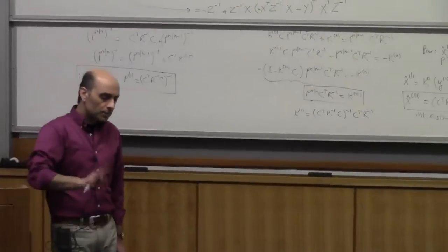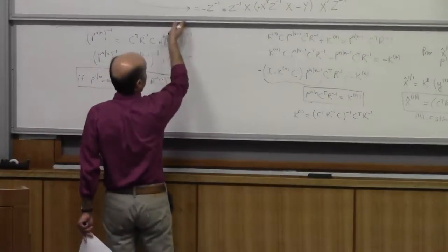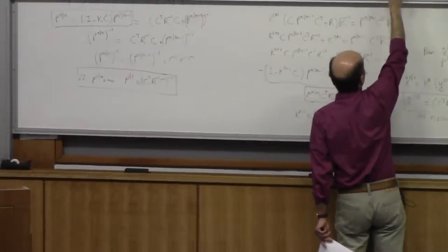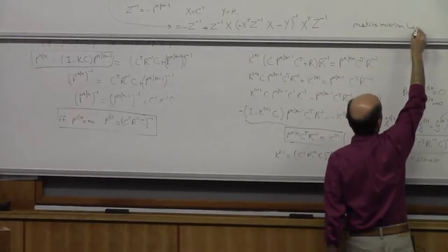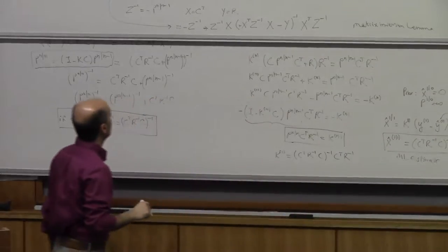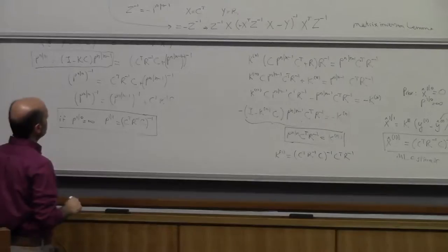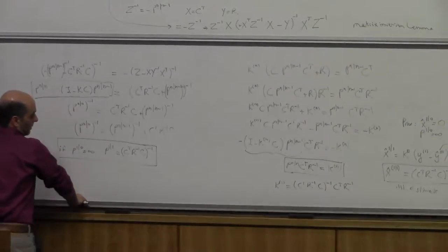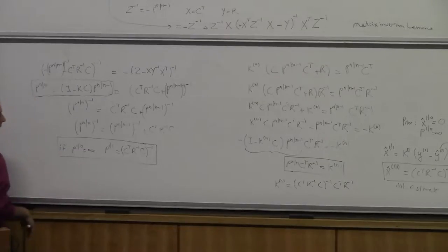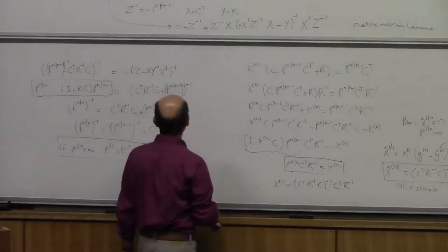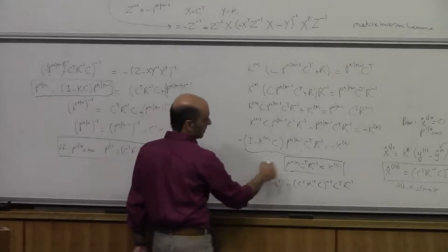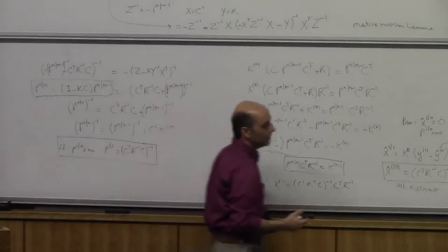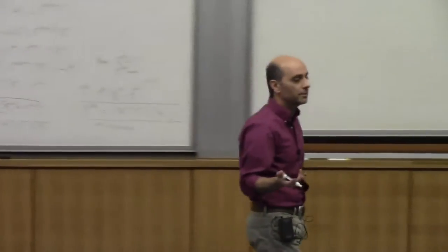So we learned a couple of things. One, we learned the matrix inversion lemma — a useful lemma we'll use again in Bayesian estimation. Two, we can form an estimate of posterior uncertainty even if our prior uncertainty is infinite. And we can form a Kalman gain even if our prior is infinite. The meaning of an infinite prior is the maximum likelihood estimate: all you know is the current measurement. If you have a prior estimate, the Kalman gain lets you incorporate both your prior and the noise in your measurement.